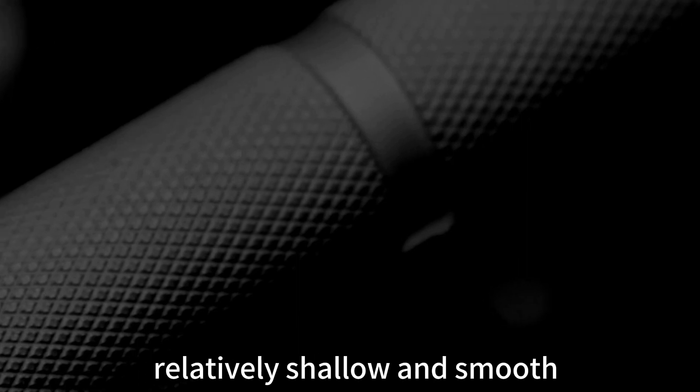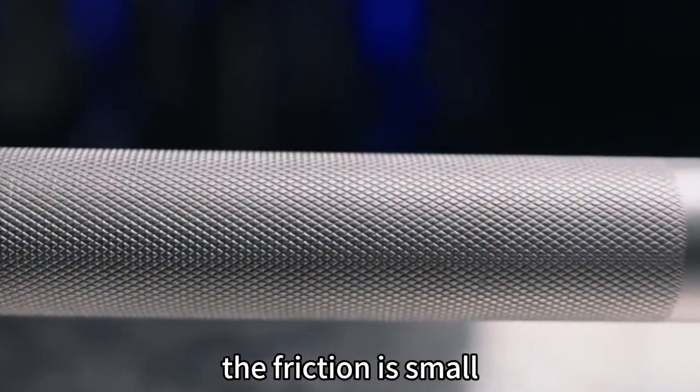The Hill knurl features a range from flat rhombuses. The groove is relatively shallow and smooth. The feel is mild and the friction is small.